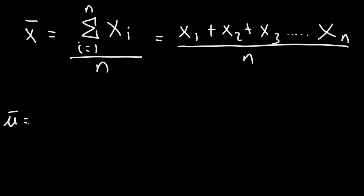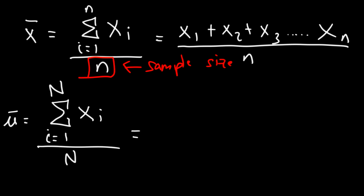Now, for the population mean, the formula is very similar. The only difference is that we're not going to be using lowercase n, but we're going to be using capital N, which represents the size of the population. Lowercase n represents the size of the sample. So let's write that sample size, and this is the population size. Now, the rest of the formula will be very similar to what we have above. It's going to be x1 plus x2 plus x3, all the way to xN, but we're going to use capital N, divided by capital N.